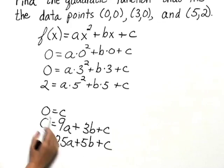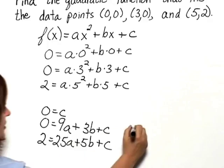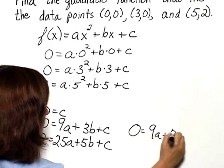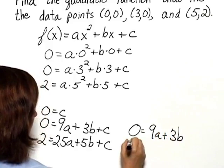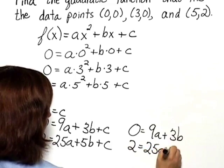And if we know that 0 is c, we can put 0 in for here. And that gives us equations 0 equals 9a plus 3b, and 2 equals 25a plus 5b.